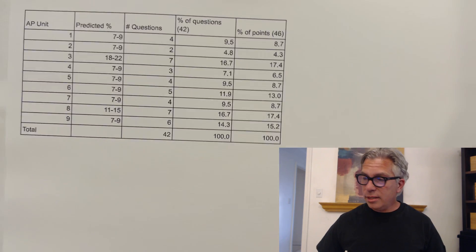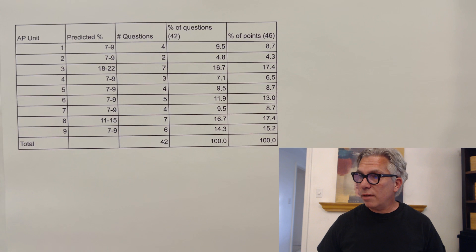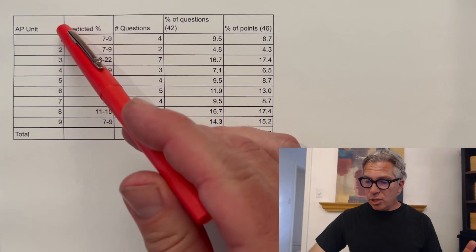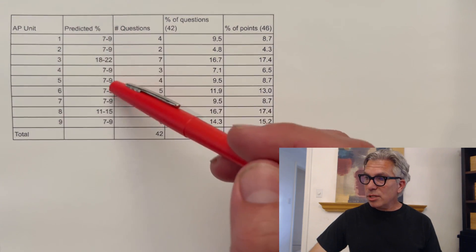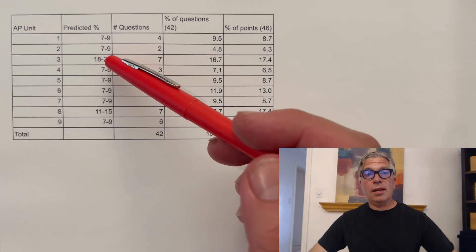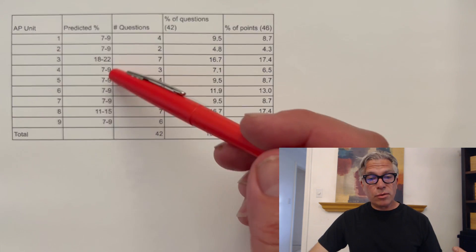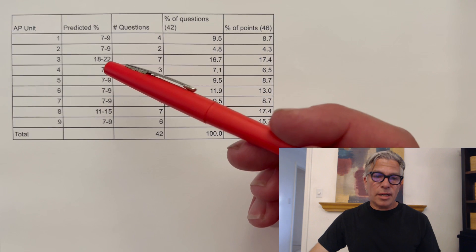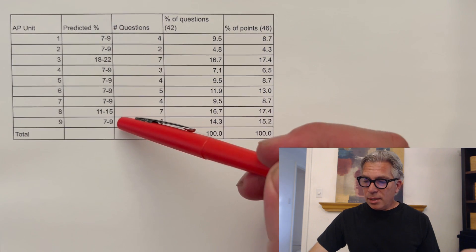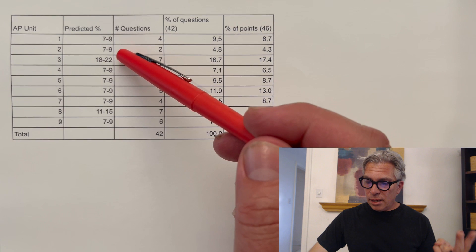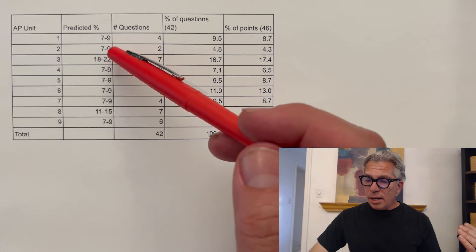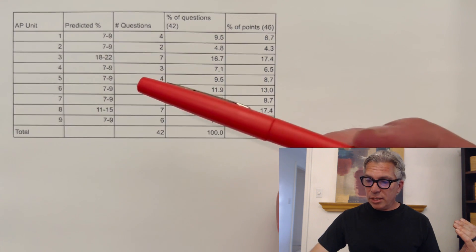I did these on a little spreadsheet this afternoon after taking a look at the FRQs. And this is what I found. So I made a spreadsheet. AP units one through nine. This is the predicted percentage that the college board tells us that it's going to be. So most of them are seven through nine percent. They give us a little leeway depending on the exact number of questions. But they say it's about seven to nine. I estimate eight for each one. The two biggies are unit three, 18 to 22 percent, and unit eight, 11 through 15 percent, which is acids, bases, buffers. That makes sense. And that was the biggest one there.